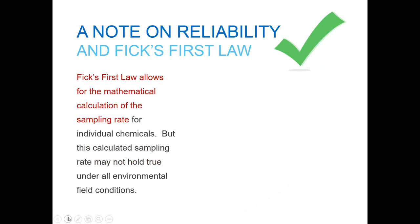Fick's First Law allows for the mathematical calculation of the sampling rate — again, D times A over L. The SKC research chemists have advised me that if you have the proper sorbent and somewhat ideal sampling conditions, these mathematically generated sampling or uptake rates using Fick's Law are fairly reliable. However, if the sorbent is not suitable for the contaminant of interest, or the environmental conditions are less than ideal, these theoretical sampling rates may not prove reliable in the field.